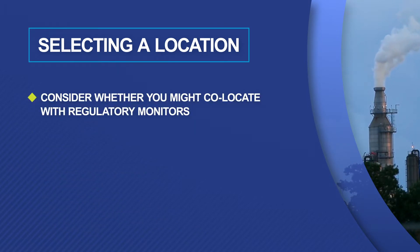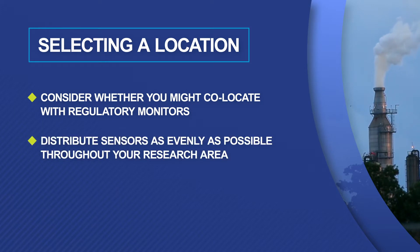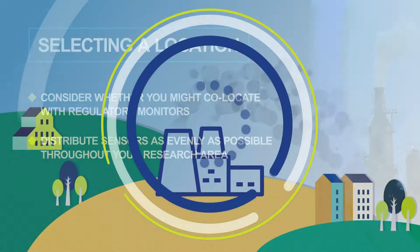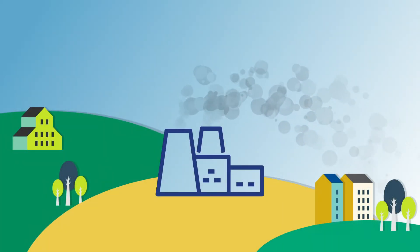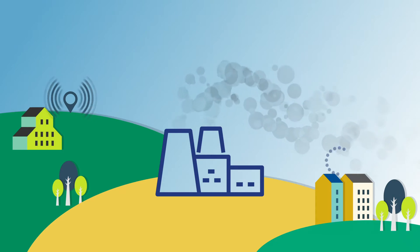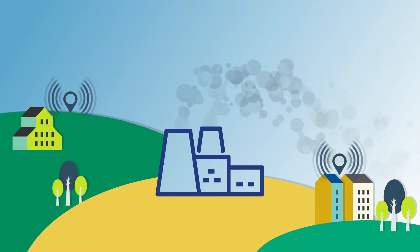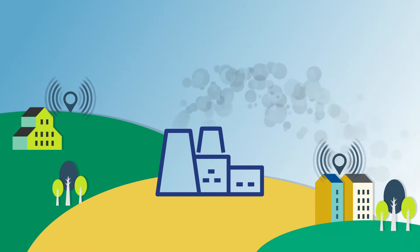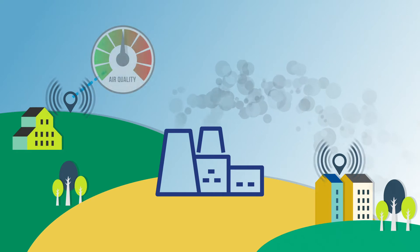You should also consider whether you co-locate with regulatory monitors to evaluate the performance and accuracy of lower-grade sensors. Distribute sensors as evenly as possible throughout your project area. As you select your location, keep in mind that it's best to include locations that are upwind and downwind of known pollution sources. This will allow for the comparison of sensor data.